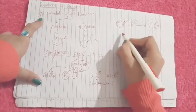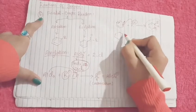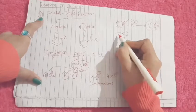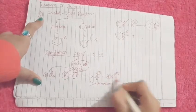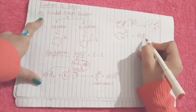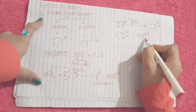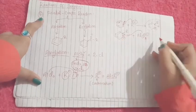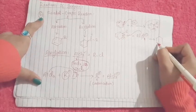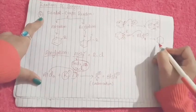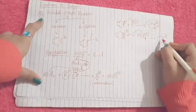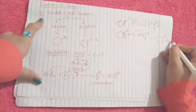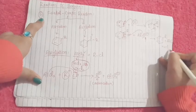It will further react with this reagent, AlCl4 negative. That AlCl4 negative will pick up this proton, and then the double bond will be shifted here, and we got our alkyl benzene plus AlCl3 plus HCl.